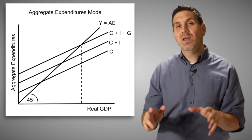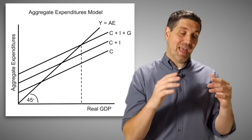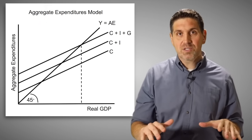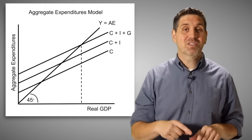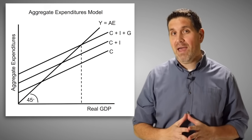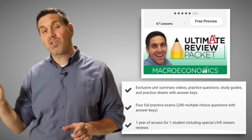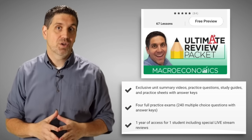There's one more graph you might see: the aggregate expenditures model. This graph is not part of the AP curriculum, so if you're in an AP class, do not learn this graph — just ignore it. If you're in a college-level university class, you might see it. If you want a separate video on that graph, let me know in the comments below, and let me know if this video helped you. Be sure to like and subscribe. Thanks for watching. Until next time.